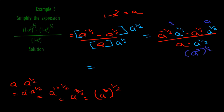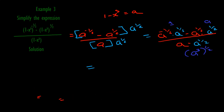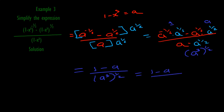Simplifying, in the numerator we now have one minus a — the first term is one, then subtraction, then the second term is a. In the denominator we have a raised to power three, then all of that raised to power a half. By the rules of indices, fractional powers are roots — a half means square root — so the denominator is the square root of a cubed.